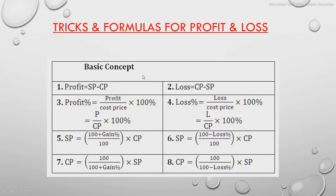There are some basic concepts which everybody knows: Profit = SP minus CP, where SP is the selling price and CP is the cost price. Loss = CP minus SP. If we have to find the profit percent, it is given by (Profit / CP) × 100. Loss percent is given by (Loss / CP) × 100.